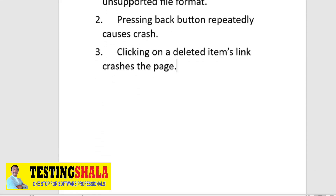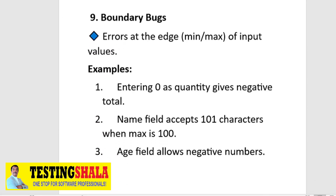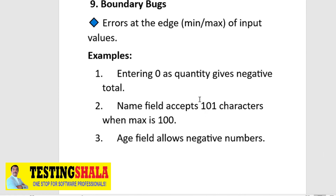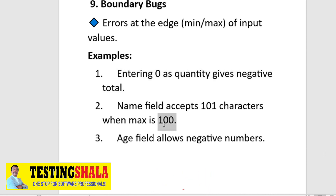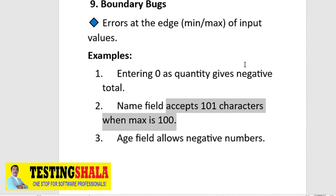The ninth type is boundary bugs — errors at the minimum and maximum input values. For example, entering 0 as a quantity gives a negative total, a name field accepts 101 characters when the maximum is 100 characters, or an age field allows negative numbers. These go beyond defined limits and should be logged under boundary bugs.